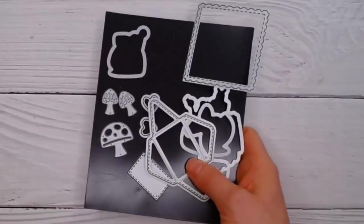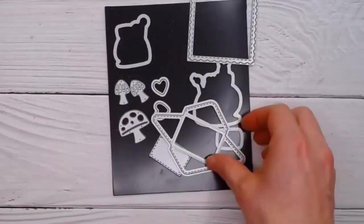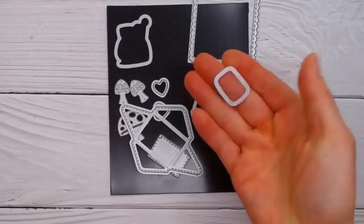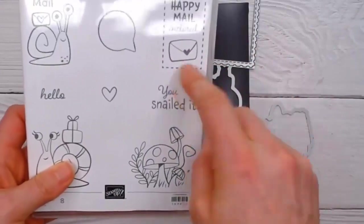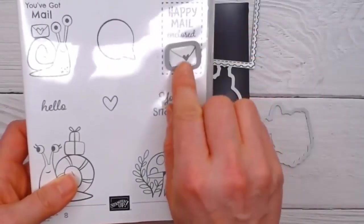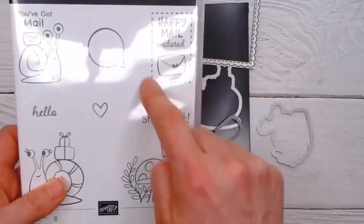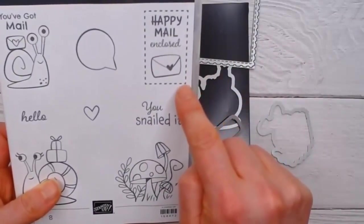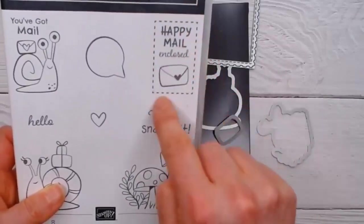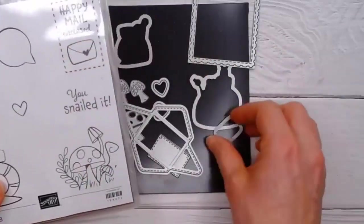This little funny rectangle die, I've had some people ask about what that's for. That fits around this envelope here. This one fits with the postage stamp punch which is a separate purchase or you can use it as is. That's to cut out that little envelope there.